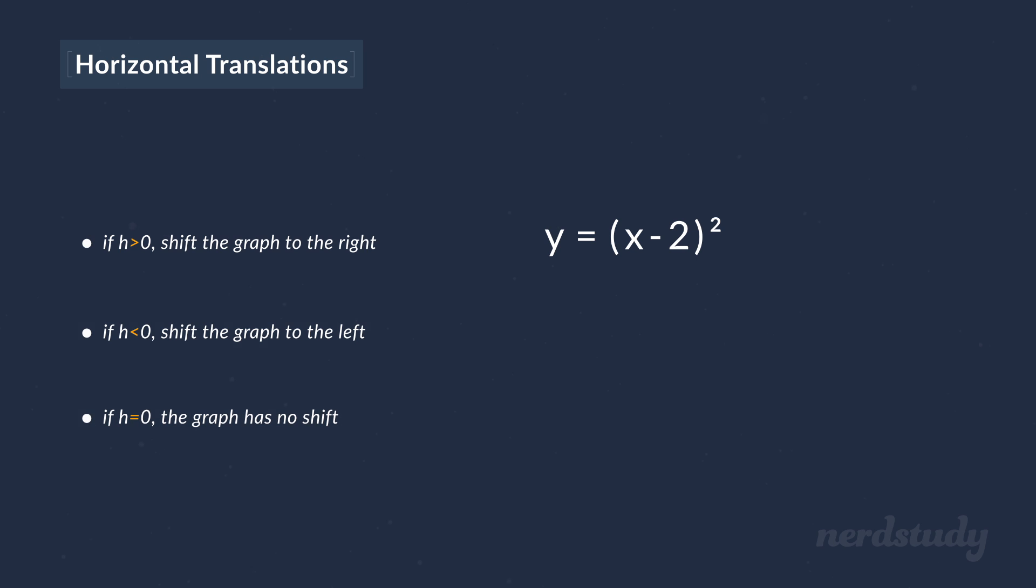The information here says that if h is positive, then we are looking at a horizontal translation to the right, and if h is negative, then we are looking at a horizontal translation to the left. Now, do not make the mistake of thinking that our h here is negative. I can understand why you might be tempted to think this way. Since we have this minus sign here, you might feel that this equation has a negative h, but this is certainly not the case.